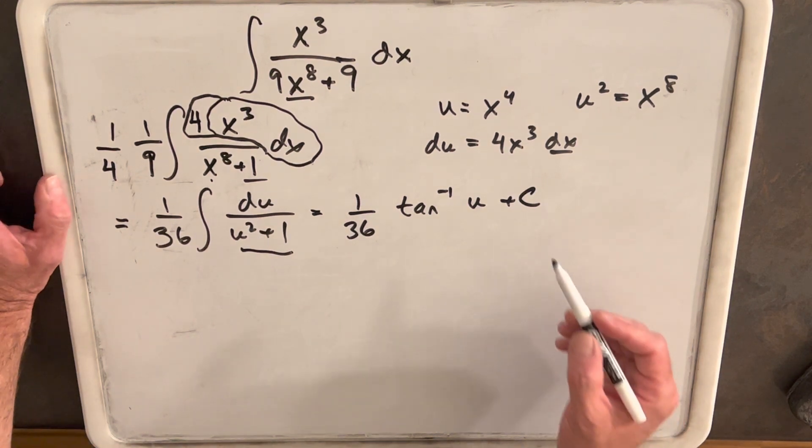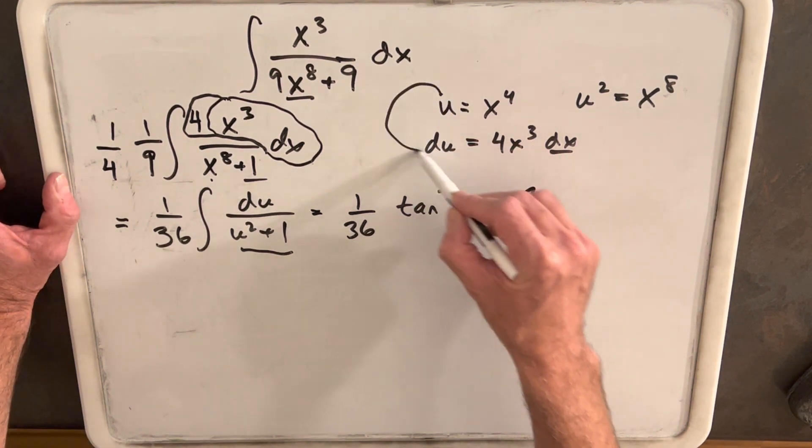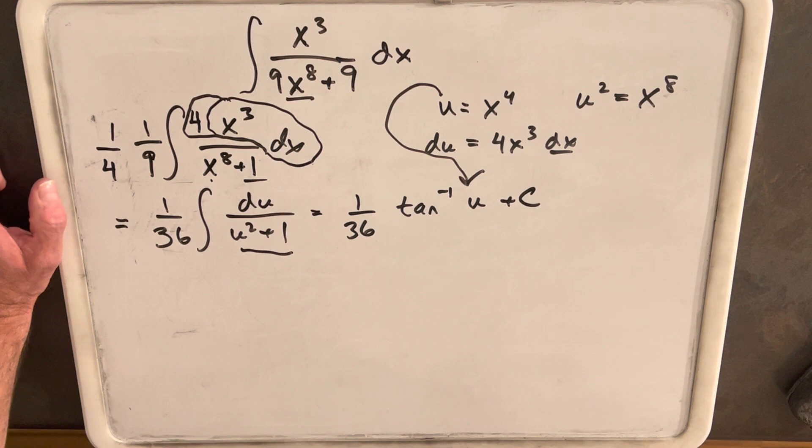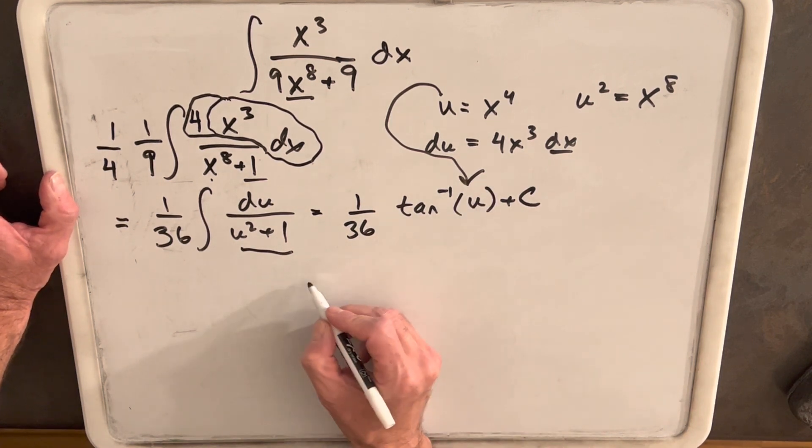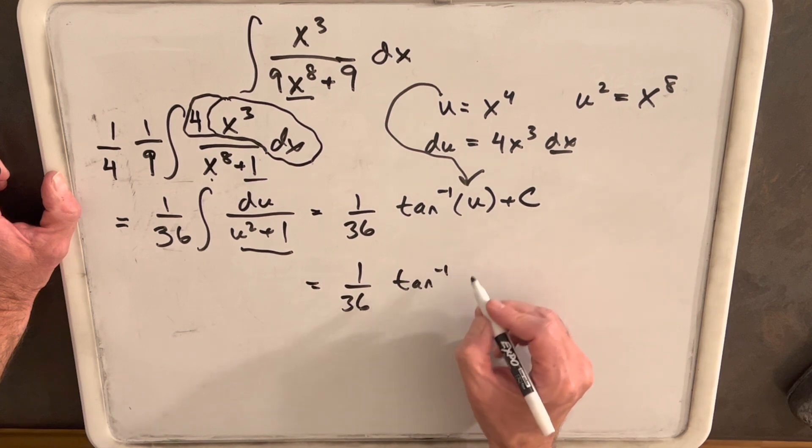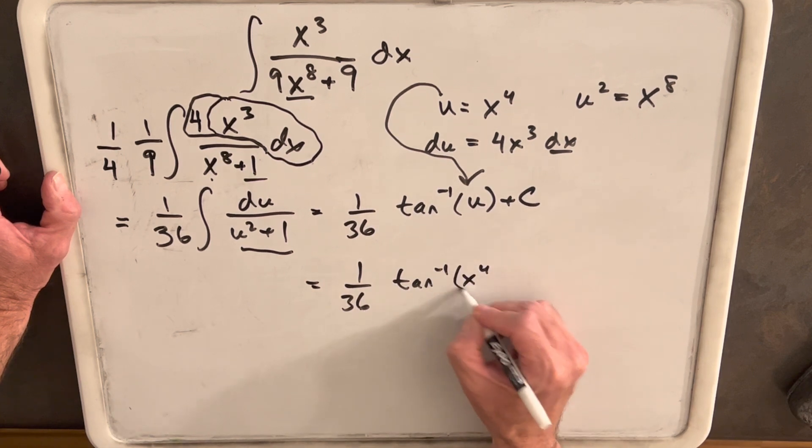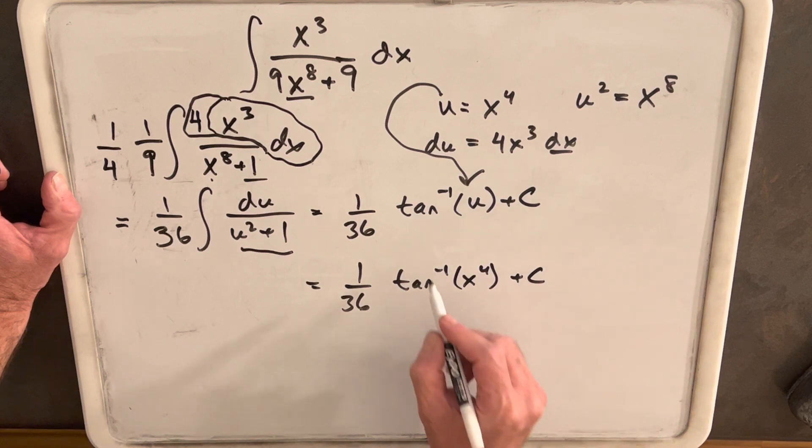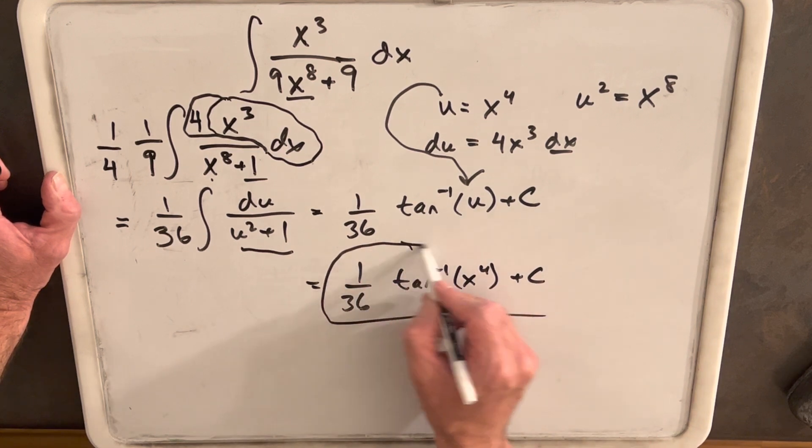Then, all we're left with is we need to back substitute. So, we need to get our u back in here. So, let's rewrite that. We'll have one over 36 inverse tangent x to the fourth plus c. And that's all there is to it. So, that's our answer.